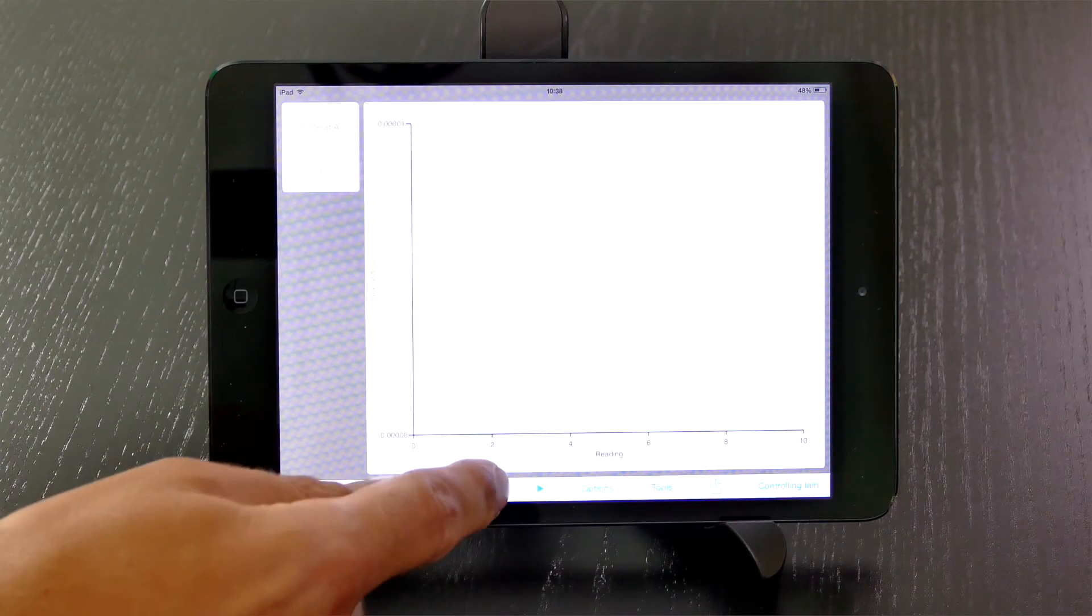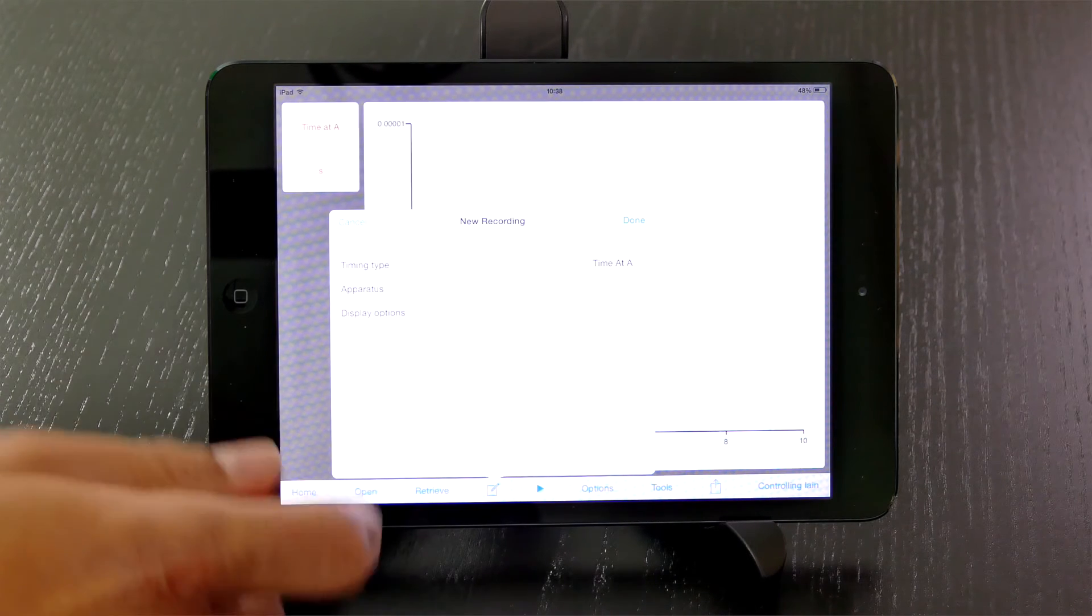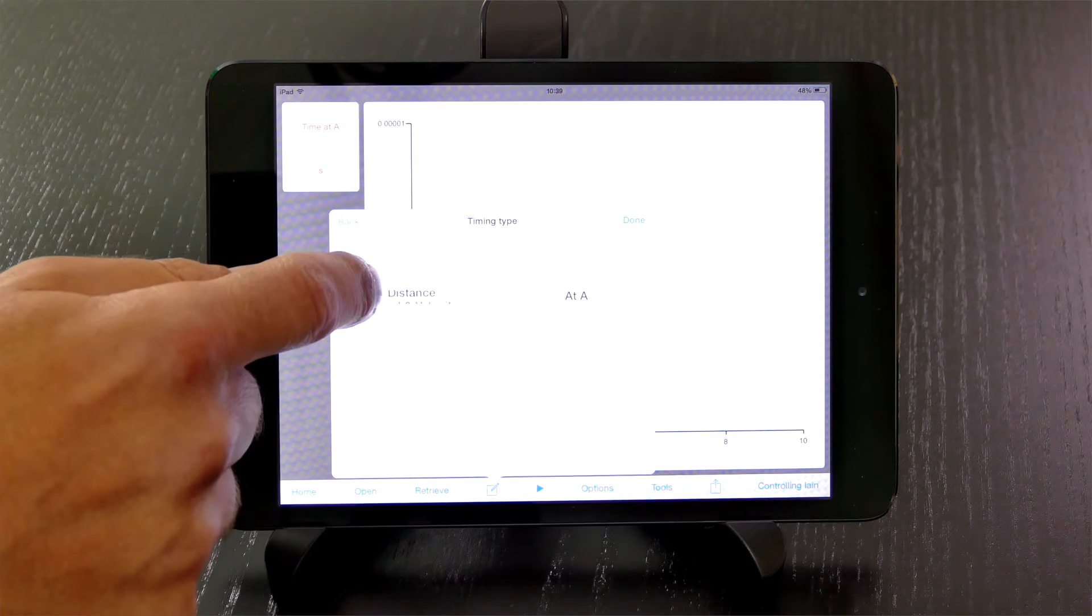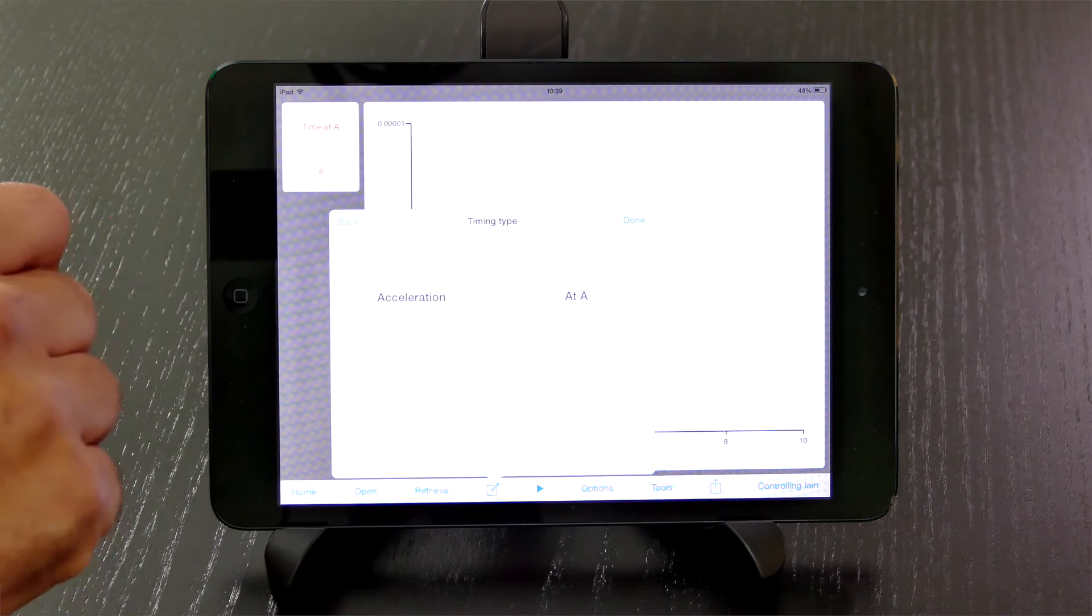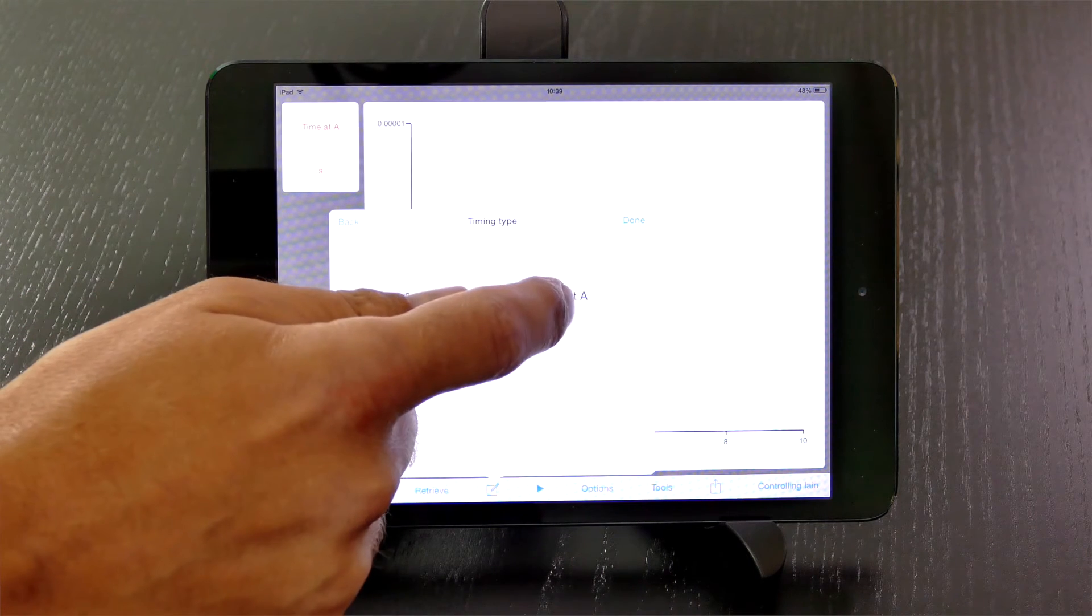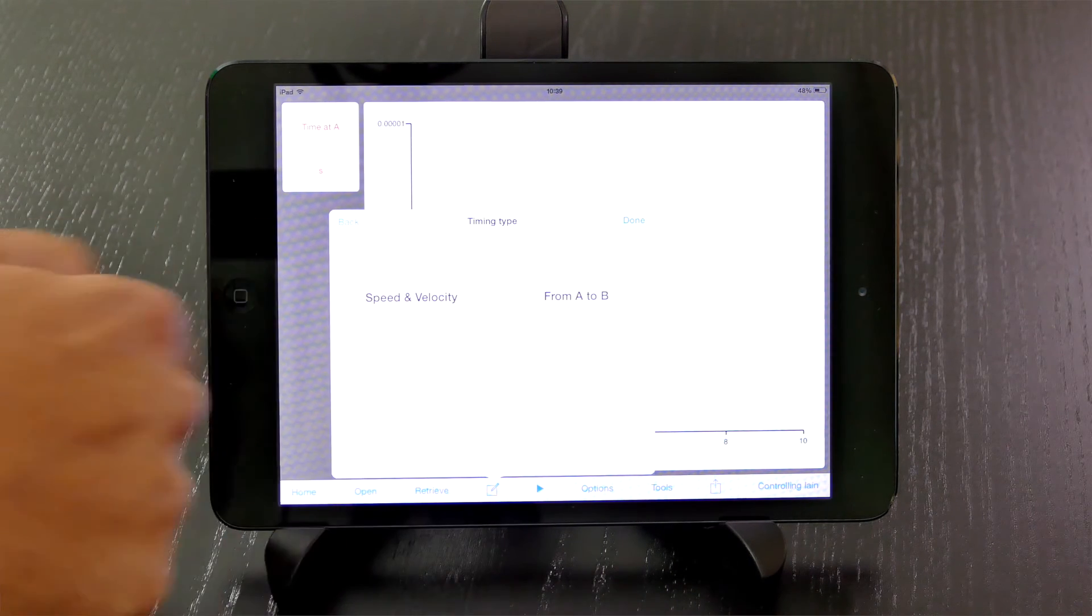we can click on timing. We can decide what we actually want to do, so timing type. We can say time, distance, speed, velocity, acceleration, momentum, kinetic energy. We shall do speed and velocity. We want from A to B.